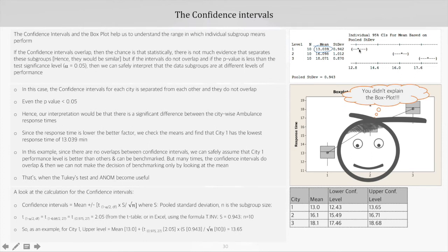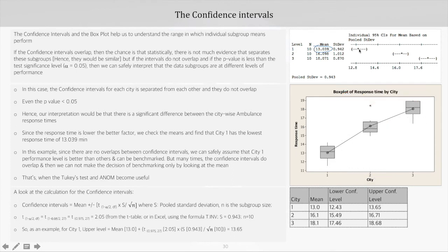You didn't explain the box plot. Yeah, okay, let me give a high-level idea on how to read the plot. Typically, since we are already learning about ANOVA, most of us would be clear about the box plot, but let's spend some time at a high level and talk about that. Box plot helps to visualize the data around the median.